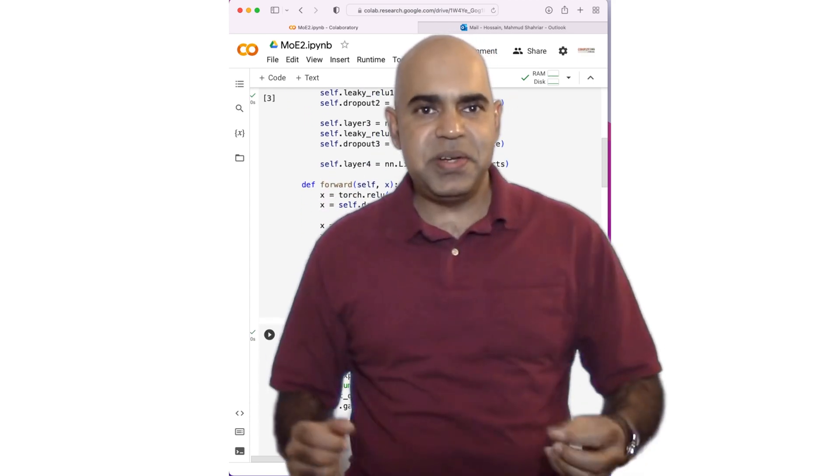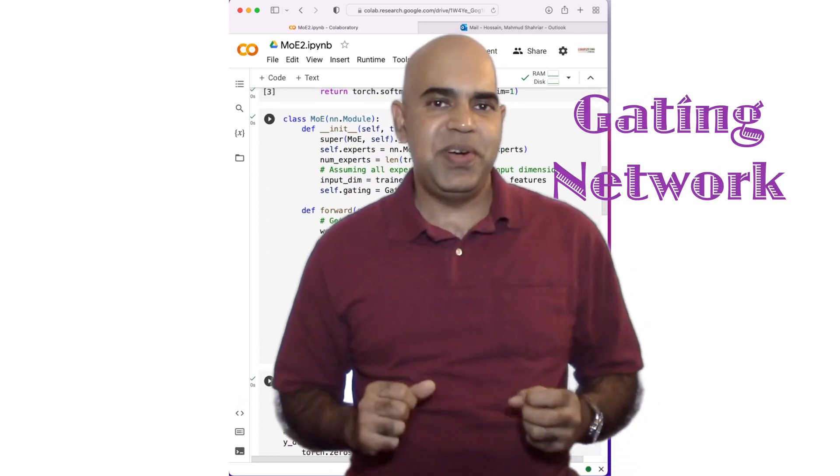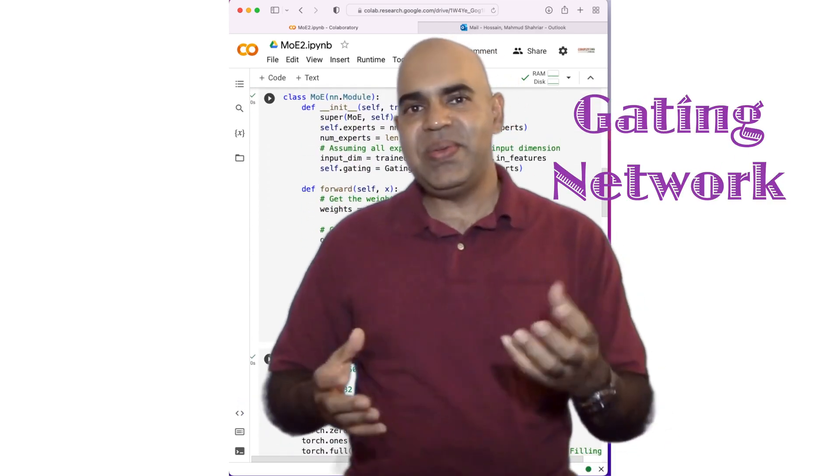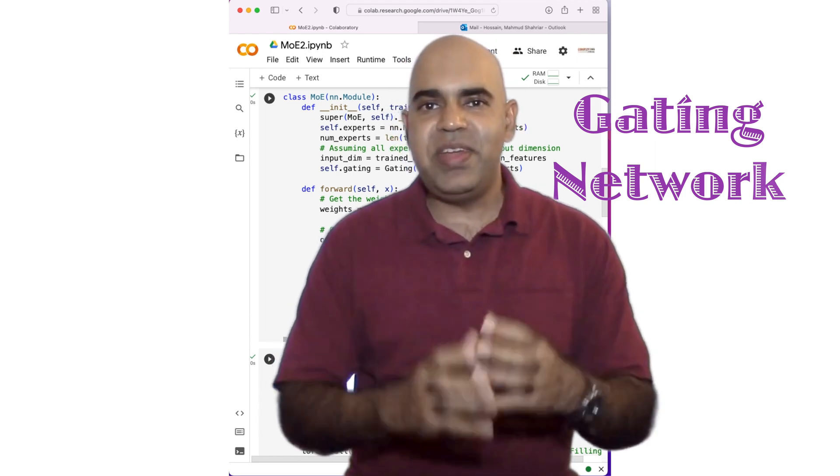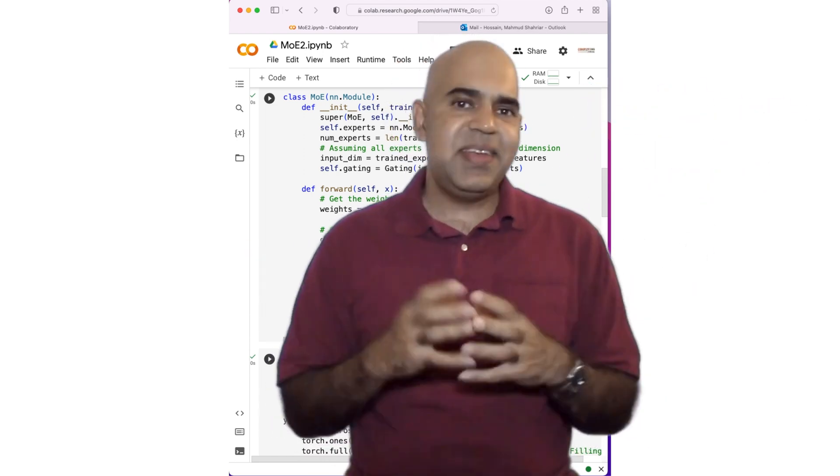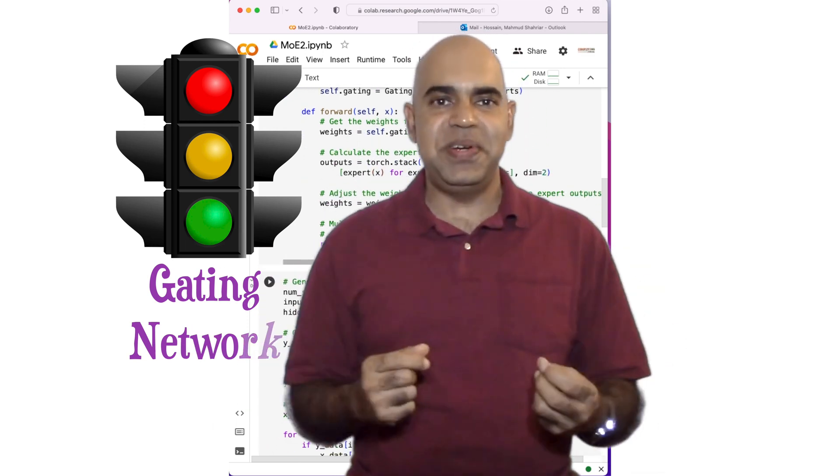In the mixture of experts, we utilize multiple experts along with a gating network. The gating network's role is to determine the contribution of each expert for a given input. Think of a gating network as a traffic controller, guiding data to the appropriate expert or experts.